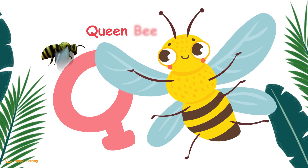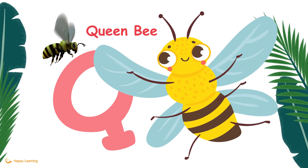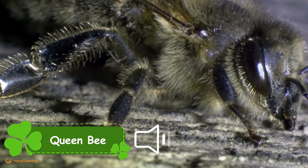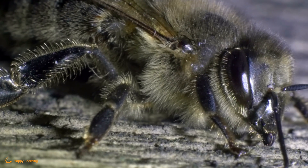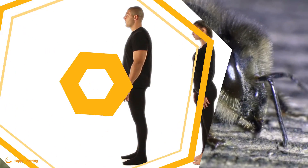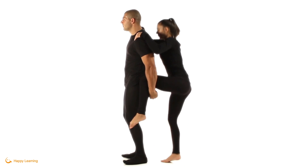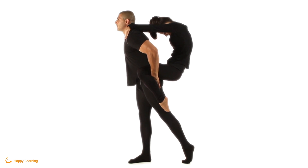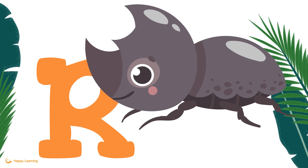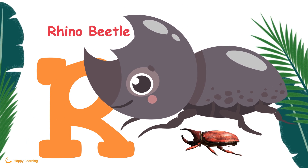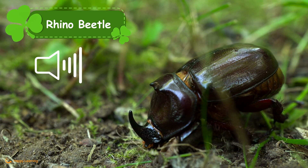Q is for Queen Bee. Queen Bee. R. R is for Rhino Beetle. Rhino Beetle.